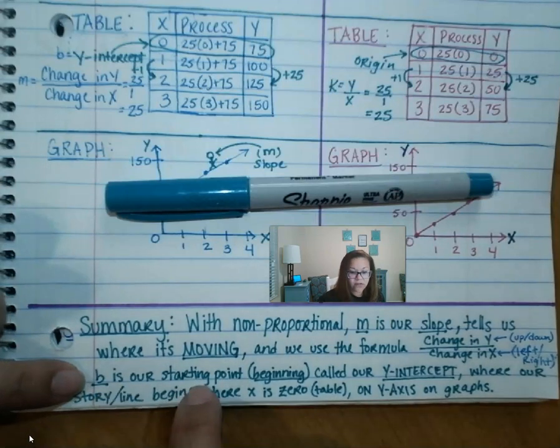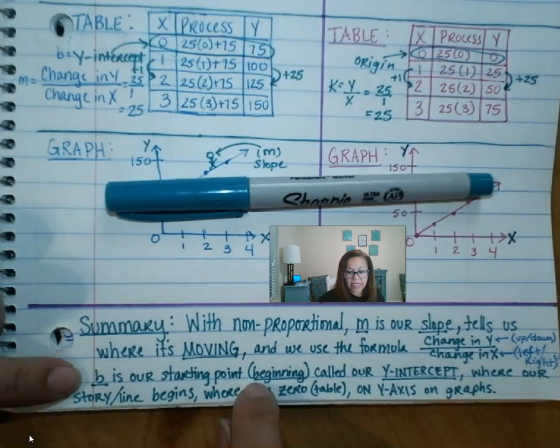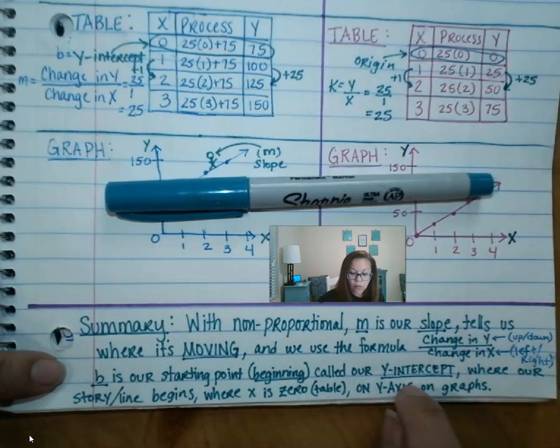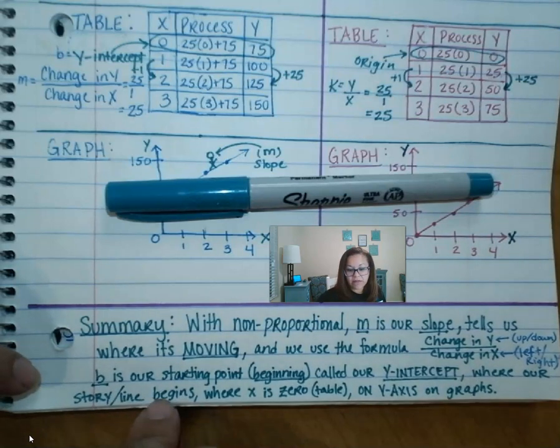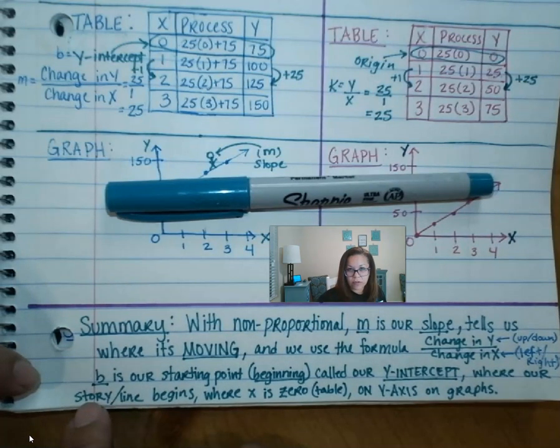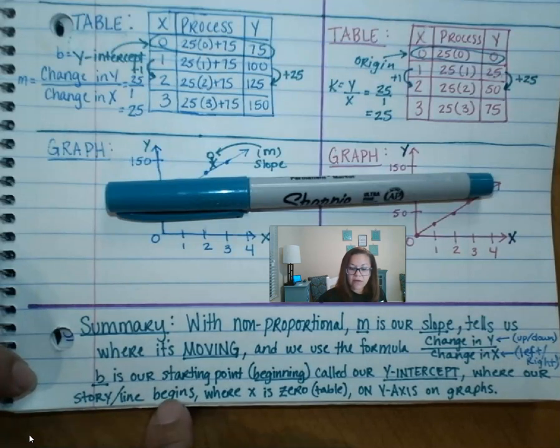Okay, B is our starting point, where it begins. It's called our Y-intercept - where our story in the verbal description begins, or where the line on the graph begins. Okay, that is our B, our Y-intercept.